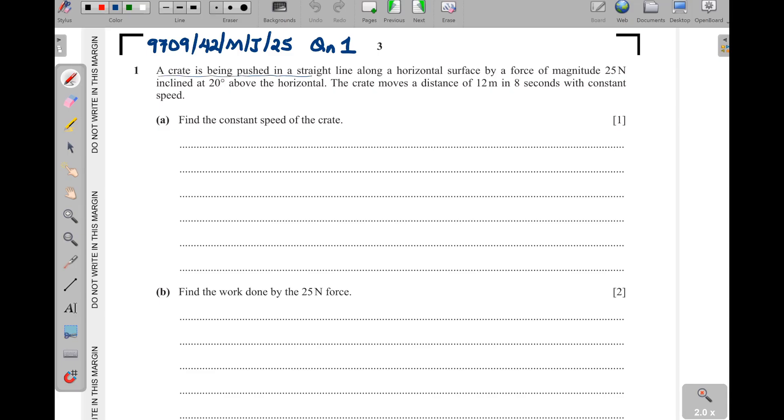A crate is being pushed in a straight line along a horizontal surface by a force of magnitude 25 newtons inclined at an angle of 20 degrees above the horizontal. The crate moves a distance of 12 meters in 8 seconds with constant speed. Find the constant speed of the crate.